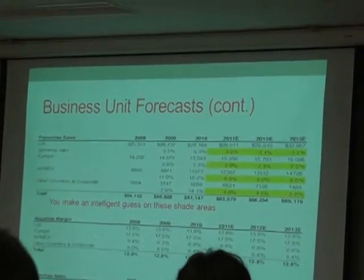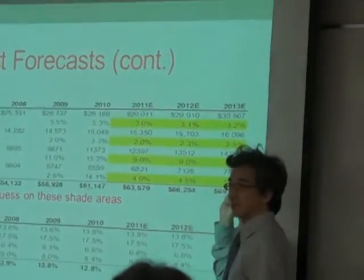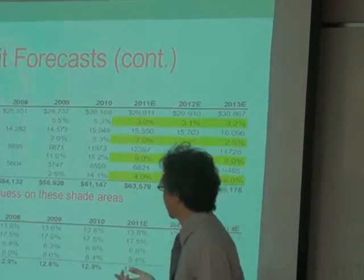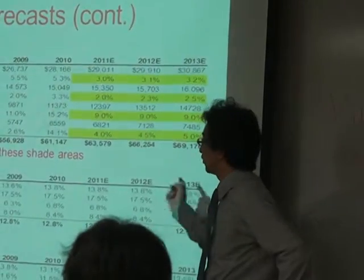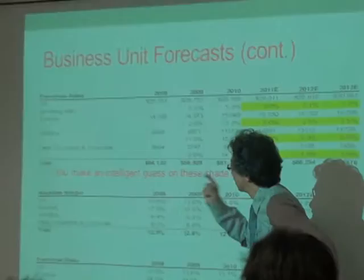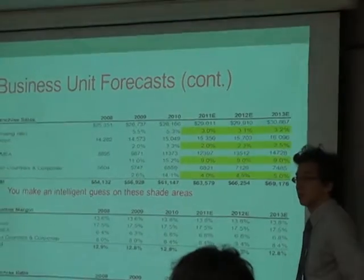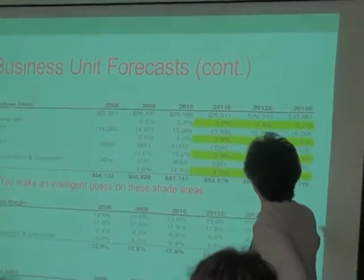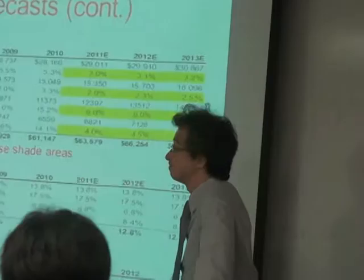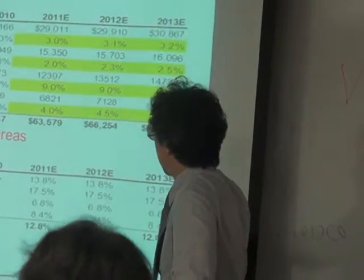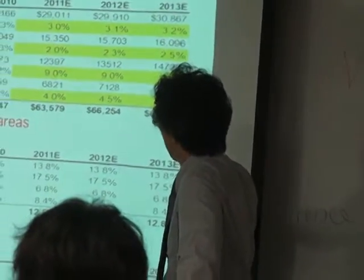For franchise sales, same thing — you put in the growth rate. Note that this is very important for companies doing franchise business: loyalty margin and franchise ratio. McDonald's believes they want to grow from the franchise business. So that's why the reality in some regions is lower compared with Europe or US, but growth is there.